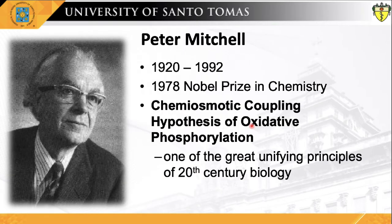This question was answered when Peter Mitchell, a British biochemist, was awarded the 1978 Nobel Prize for Chemistry for his groundbreaking discovery of the chemiosmotic mechanism of ATP synthesis. He coined this discovery as the chemiosmotic coupling hypothesis of oxidative phosphorylation, which eventually became one of the unifying principles of 20th century biology.